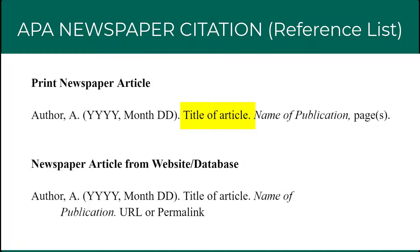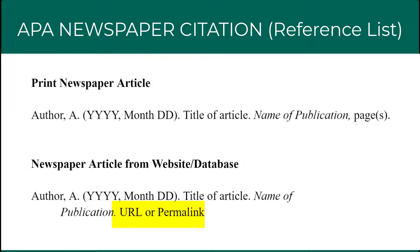Then, format the title of the article in sentence case — meaning the first letter of the first word is capitalized only, and the first letter of all remaining words will be lowercase unless that word is a proper noun or unless it follows a colon. This is followed by a period. The next element is the name of the publication, which will be italicized and formatted in title case — meaning you capitalize the first letter of the first word and all major words. APA defines major words as nouns, verbs, linking verbs, adjectives, adverbs, pronouns, and all words of four letters or more.